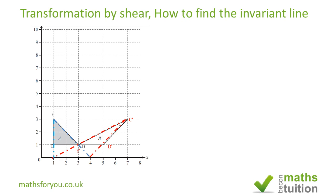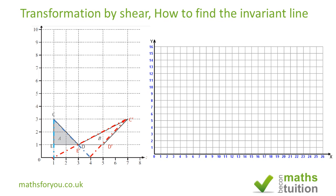So that is the invariant line there. Moving on, this time I've got triangle ABC which has been transformed to A prime, B prime, and C prime, and now I want to find the invariant line for this transformation.